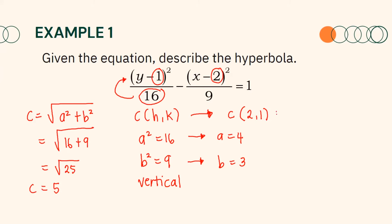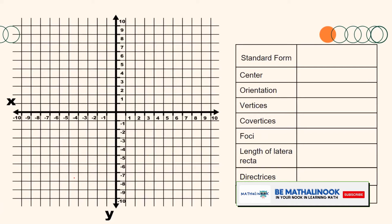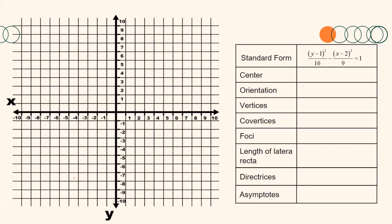Since we already have the center, the orientation, and the values of a, b, and c, we can now determine the other elements by graphing. The standard form is (y − 1)²/16 − (x − 2)²/9 = 1, with center at (2, 1), vertical orientation, and a = 4, b = 3, c = 5. Since the hyperbola is vertical, the vertices are above and below the center, 4 units away, giving vertices at (2, 5) and (2, −3).